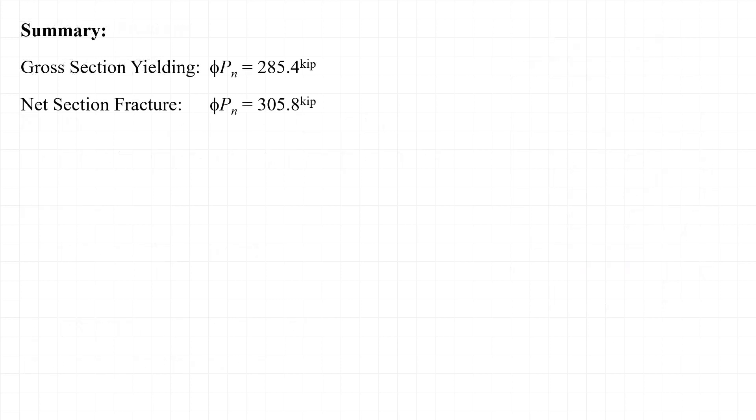In summary, we have a gross section yielding design strength phi times P sub n of 285.4 kips, and a net section fracture design strength phi times P sub n of 305.8 kips. The lower of these two values governs, so the gross section yielding limit state governs for this member, and we have an available strength of phi times P sub n equal to 285 kips.